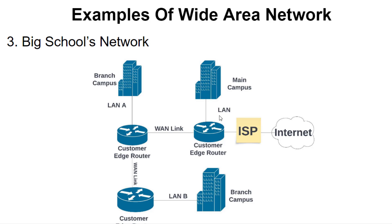The next example is a big school's network. Just like in a bank's Wide Area Network, the first thing is an internet source and an ISP. The next thing is the Customer Edge Router — a router located at a particular local area network that provides routing functionality to all the host devices. In this case, I used this symbol, which you can understand to comprise many host devices in a particular enterprise. This connection runs to the Customer Edge Router supplying this particular branch.